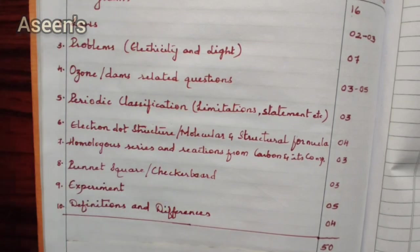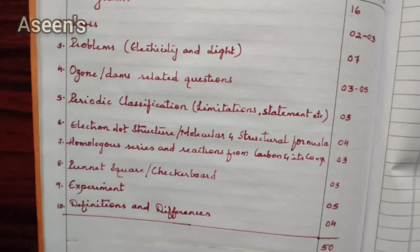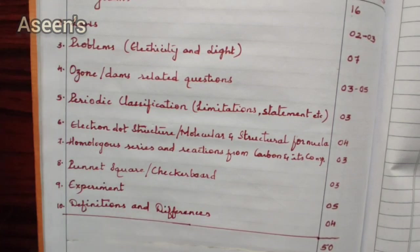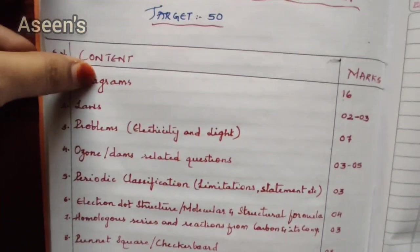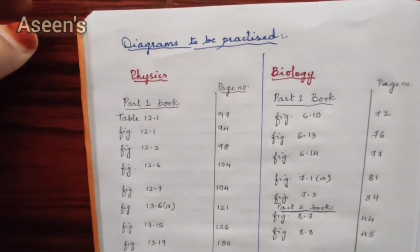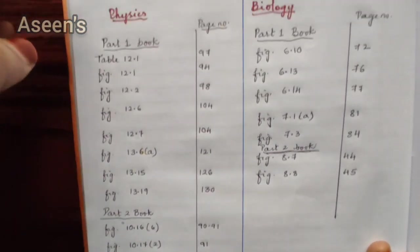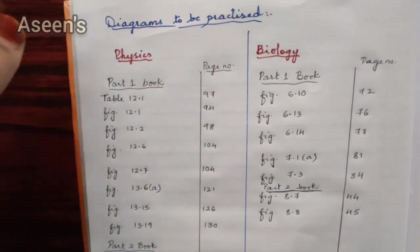The last topic, which has a wide scope, is definitions and differences — four marks will definitely be given here. We aren't sure from which chapter exactly they will be asked, but I will provide a list of possible definitions and possible differences, which will be a plus point for your studying. That covers the science passing package. I have also received frequent questions about which diagrams to practice, so I have made a list and will share it now.